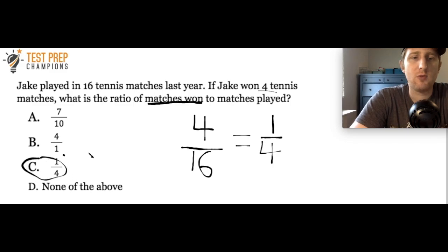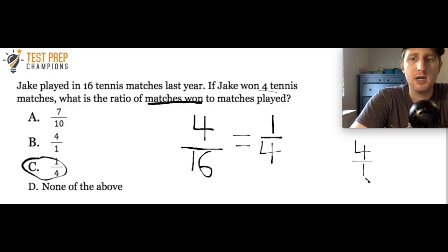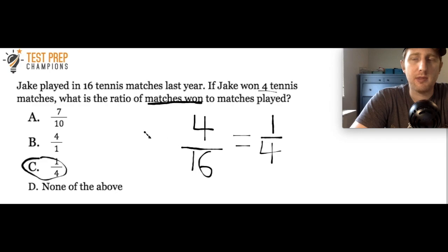Note that I put 4 over 1 as answer choice B — sometimes on your test they will flip the numbers to trick you. So if the right answer is 1 over 4, they'll give you 4 over 1 as a distractor. Also keep in mind: with regular fraction questions you'd write 4 over 1 simply as 4, but when doing ratio questions, if you get 4 over 1 or 5 over 1, you leave it as a fraction — don't simplify it to just 4 or 5.